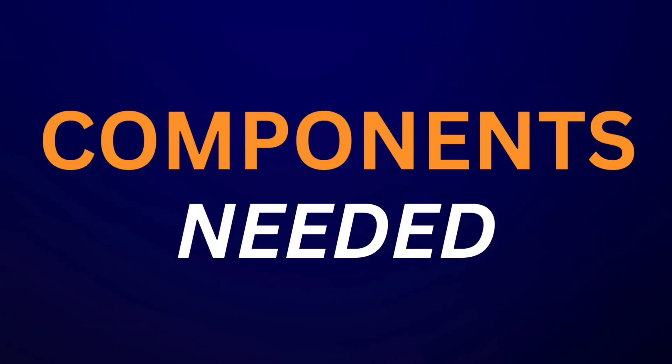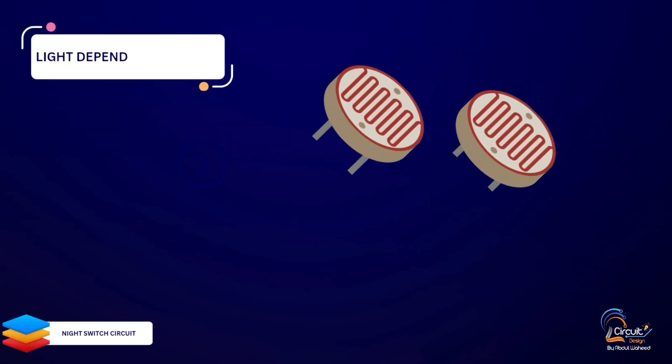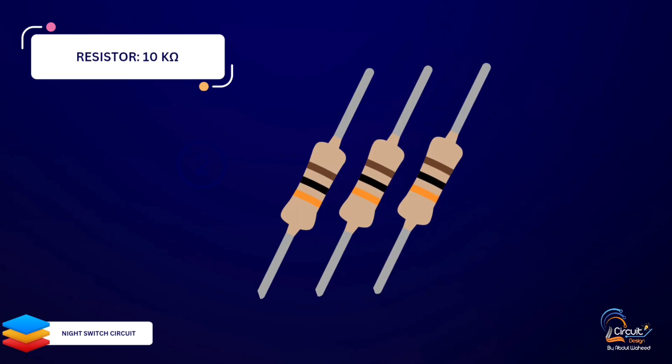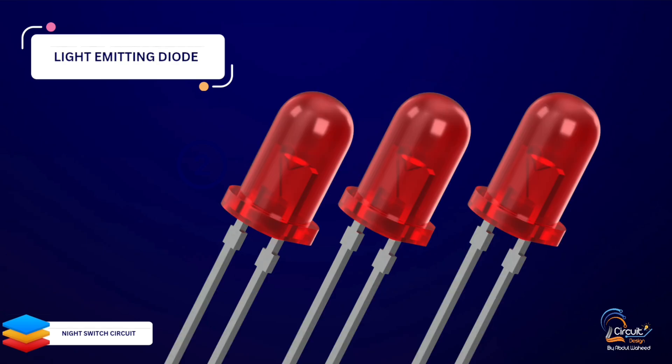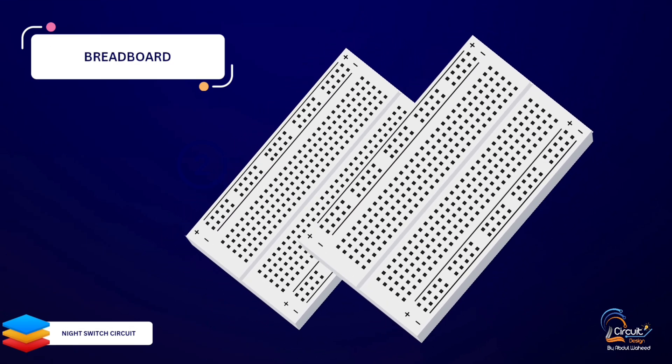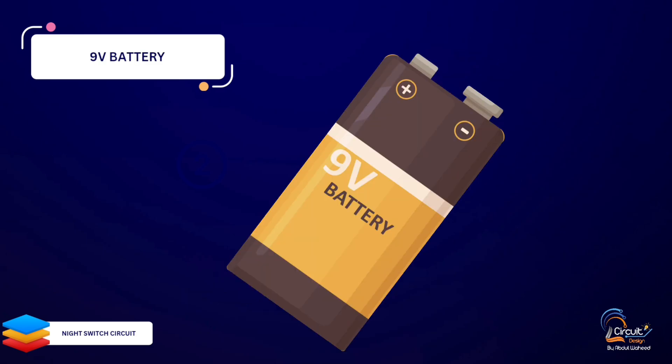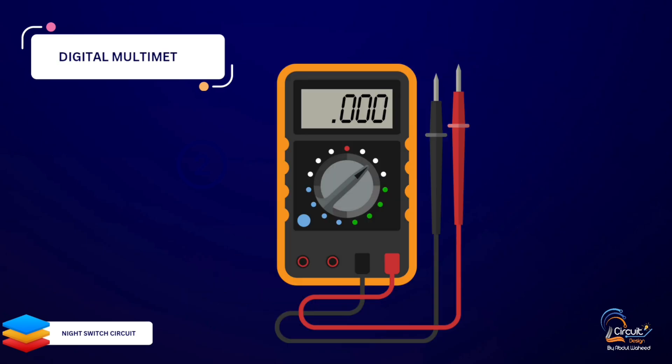Here are the components we'll need for this project: 1. LDR light dependent resistor. 2. 2N3904 NPN transistor. 3. 10 kOhm resistor. 4. 1 kOhm resistor. 5. Light emitting diode. 6. Breadboard and jumper wires. 7. Power source, 9 volts. 8. Digital multimeter.